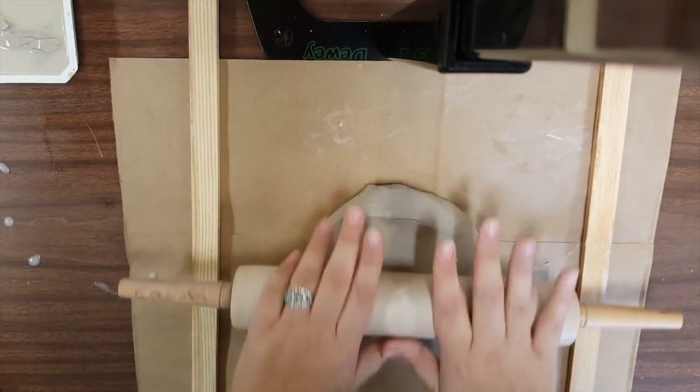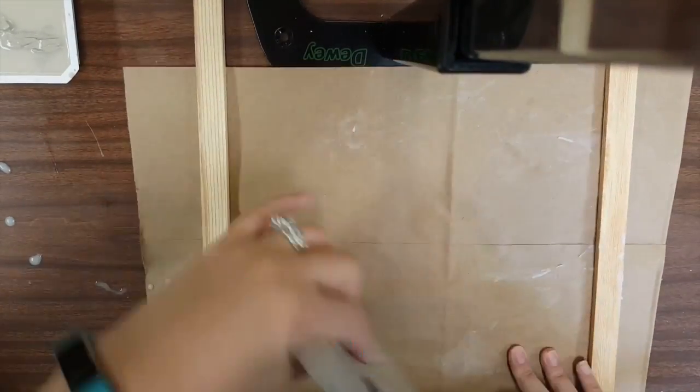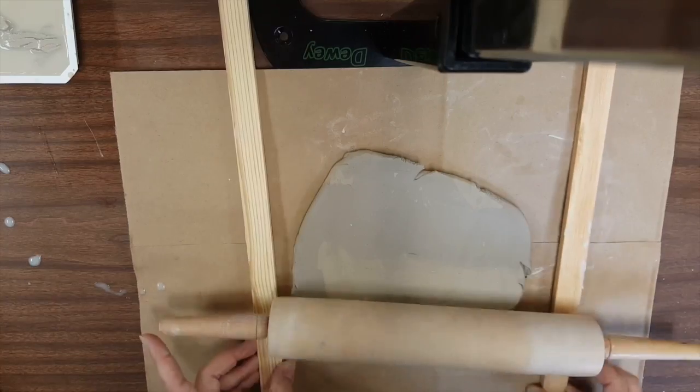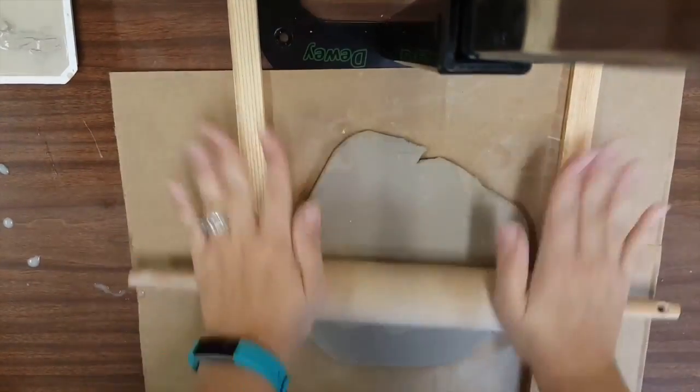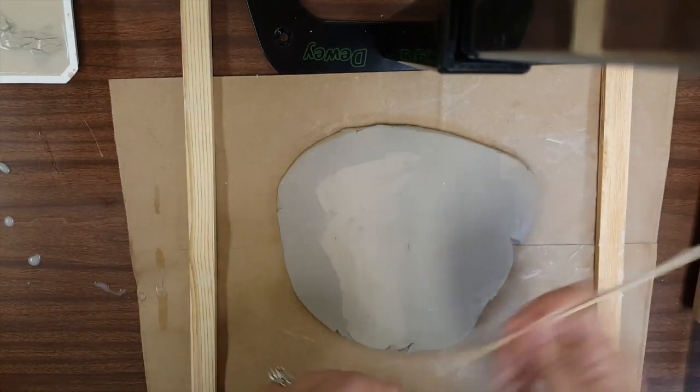We have our workspace set up with two wooden slats, clay in the middle, and our rolling pin. We want to make sure our slats are close enough so that we are rolling on top of the wooden slats. That's going to help control the thickness of our owl.